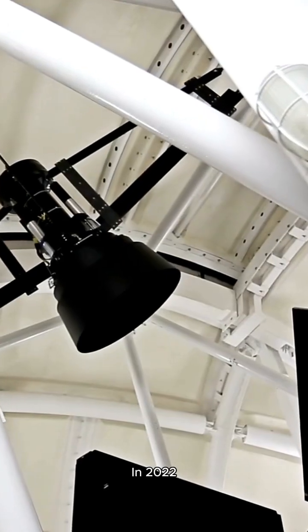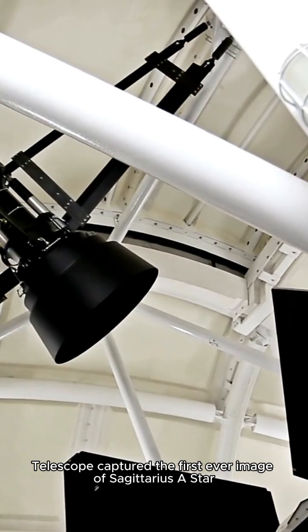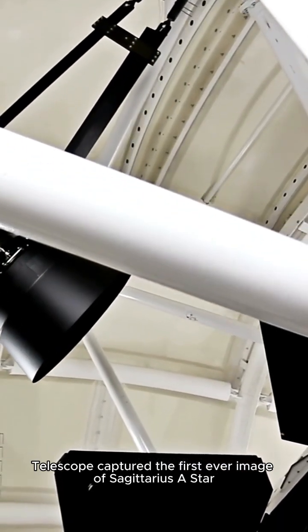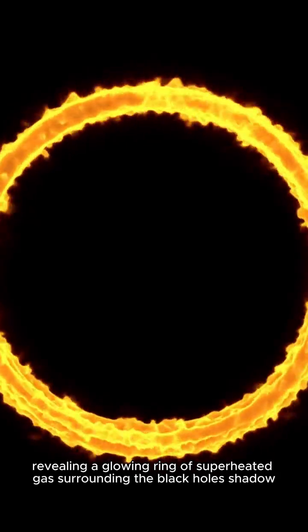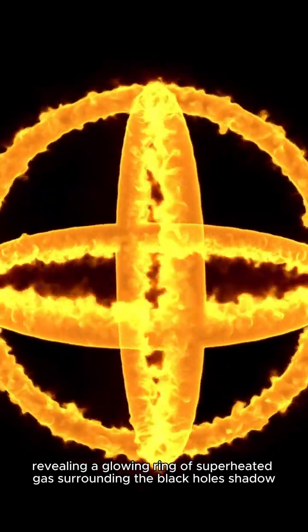In 2022, astronomers using the Event Horizon Telescope captured the first-ever image of Sagittarius A-star, revealing a glowing ring of superheated gas surrounding the black hole's shadow.